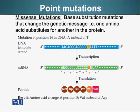There are missense mutations — base substitution mutations that change the genetic message. For example, when one nucleotide is switched with a different nucleotide, the protein formed subsequently as a result of transcription and translation now has a different amino acid than originally intended. In the example here, mutation at position number 14 in DNA has an A instead of T. As a result, when the RNA is translated, we end up having a valine instead of aspartic acid, which changes the structure and function of the protein.